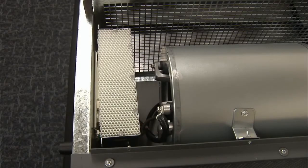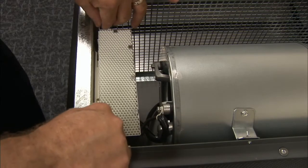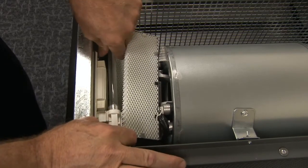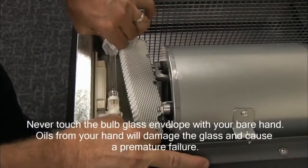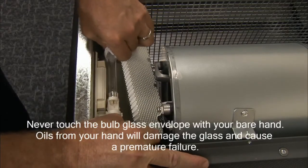With both screws removed, lift and position the honeycomb cover out of the way as shown. Remove the old UV bulb by grasping it and sliding it from the ballast. Next, install the replacement bulb using the soft cloth.